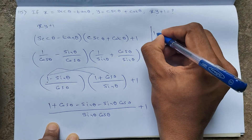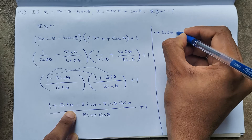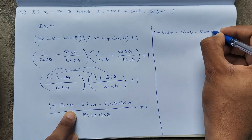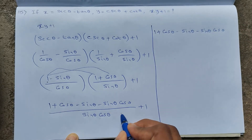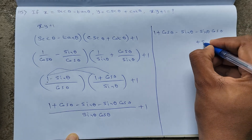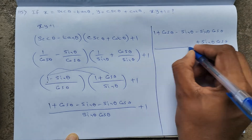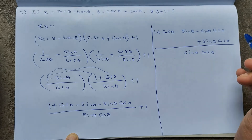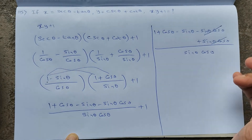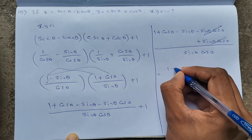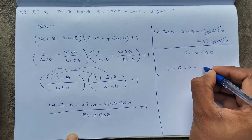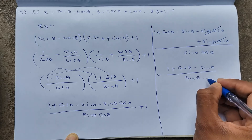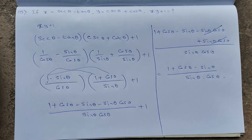The −sinθ cosθ and +sinθ cosθ cancel, leaving (1 + cosθ − sinθ) / (sinθ cosθ).